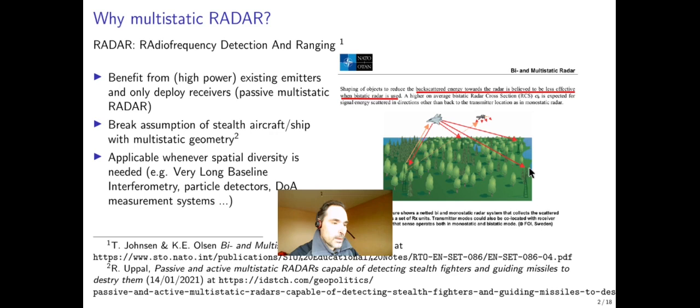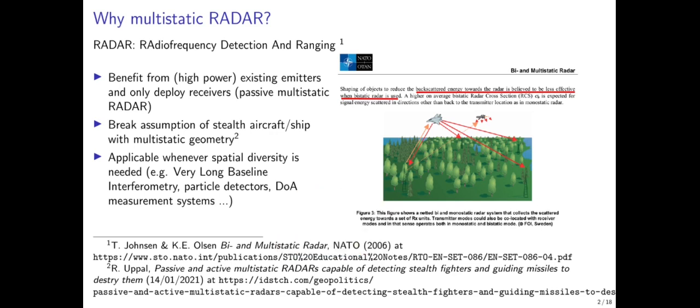First, let us discuss why we wish to have this kind of distributed passive radar. Radar is radio frequency detection and ranging, and most civilian applications will not allow powerful dedicated emitters. So for passive multi-static radar, we use existing electromagnetic emitters and look at the return signal from planes or moving targets, benefiting from existing high-power emitters.